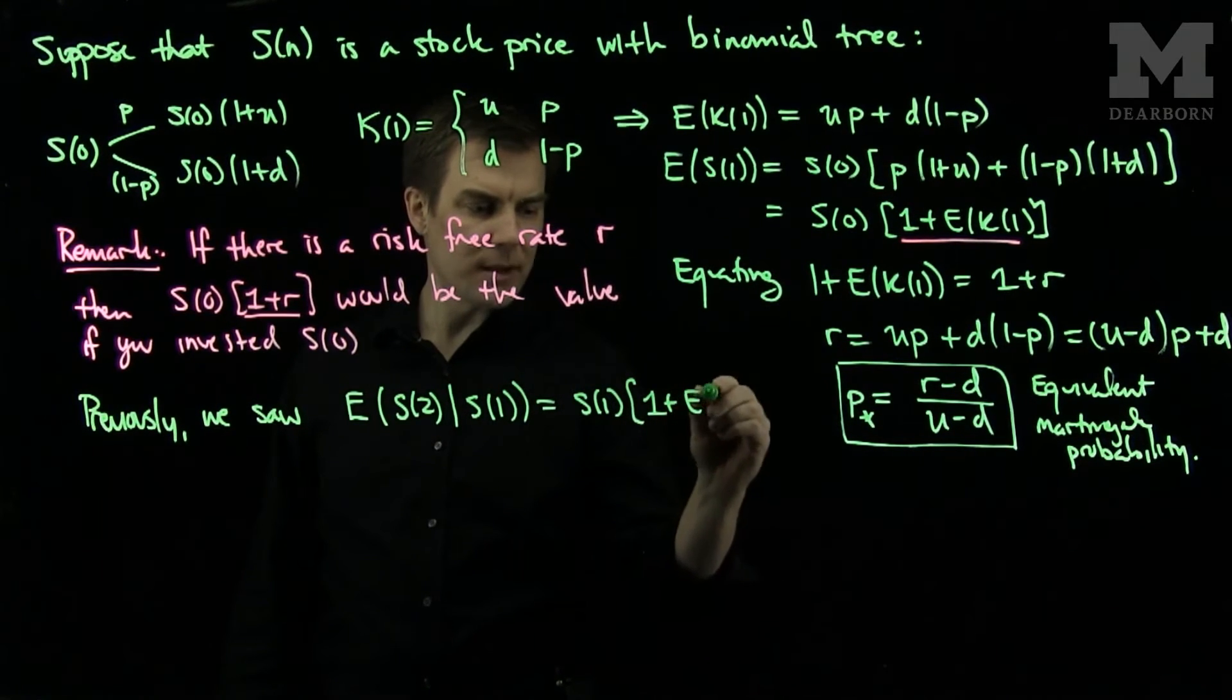So what we can see is in the case that I choose the probability to be the risk-free probability, we will have the result that with the risk-free choice of probability, the conditional expectation, the expectation of S_n given S_{n-1} will be S_{n-1} times (1+R).